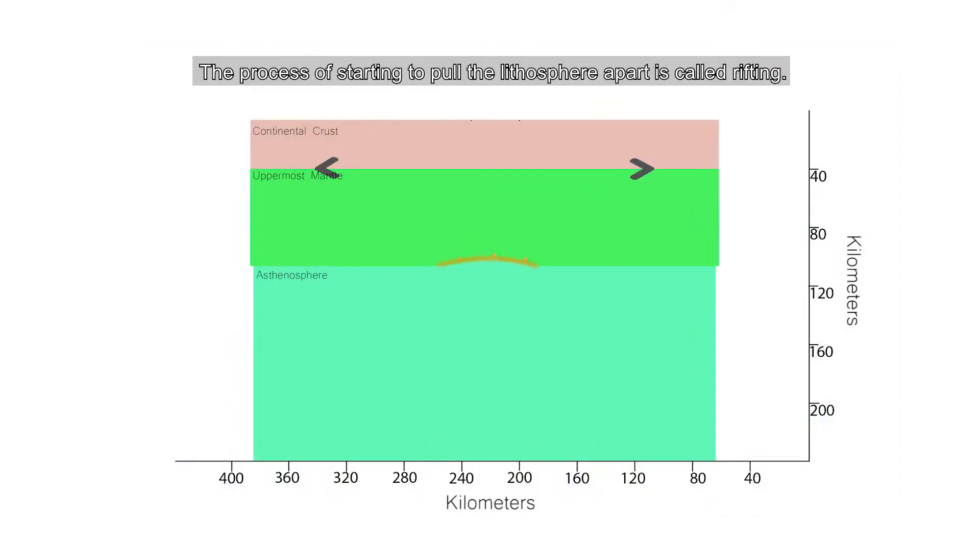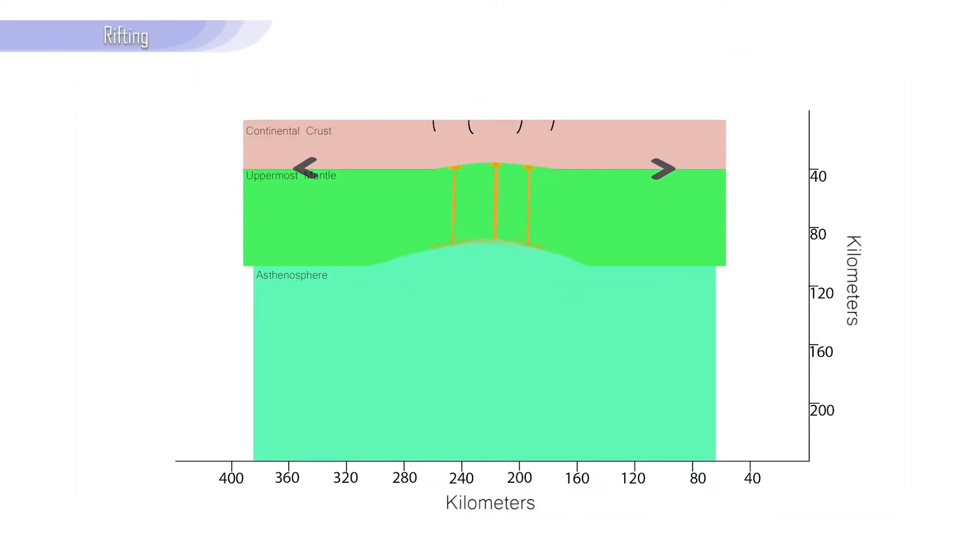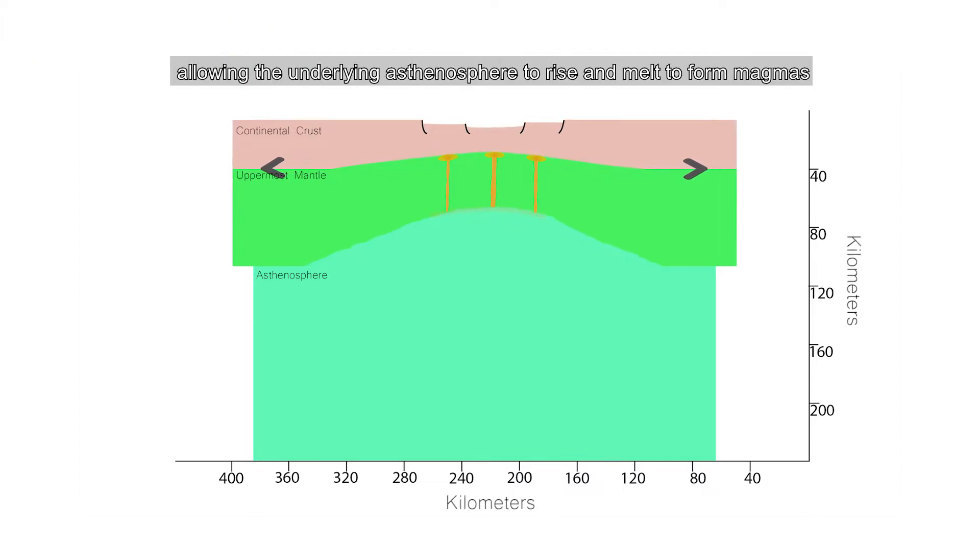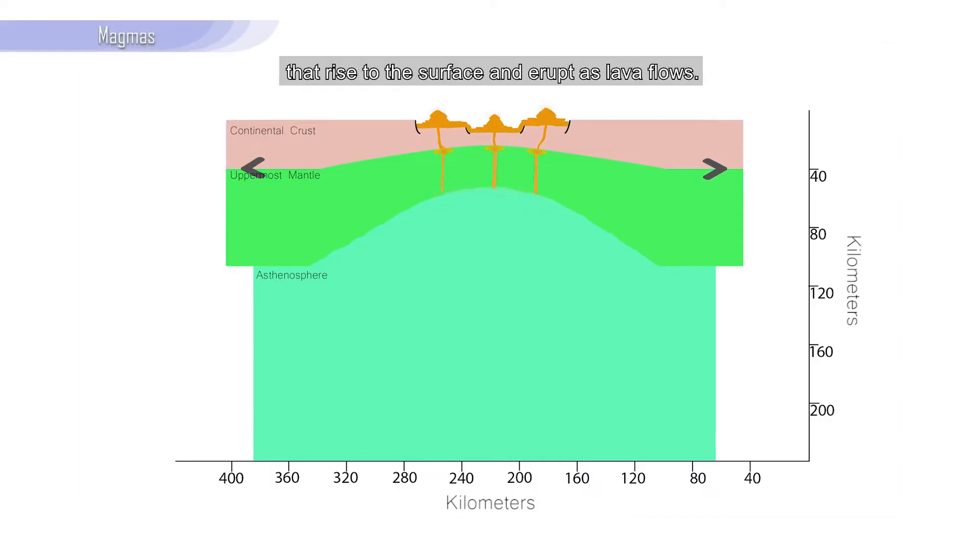The process of starting to pull the lithosphere apart is called rifting. As rifting progresses, the lithosphere thins more and more, allowing the underlying asthenosphere to rise and melt to form magmas that rise to the surface and erupt as lava flows.